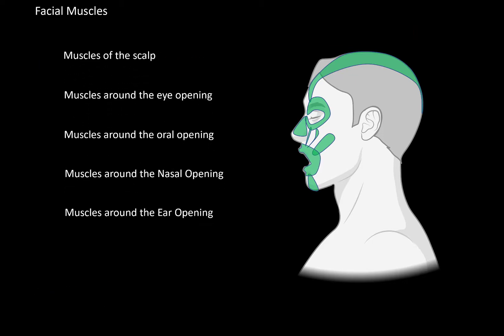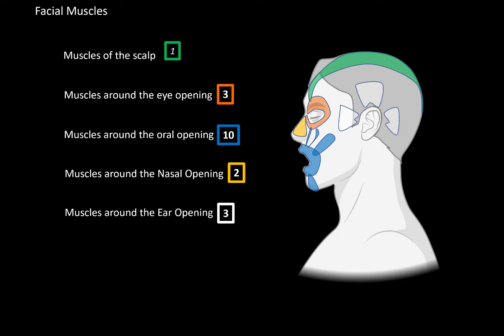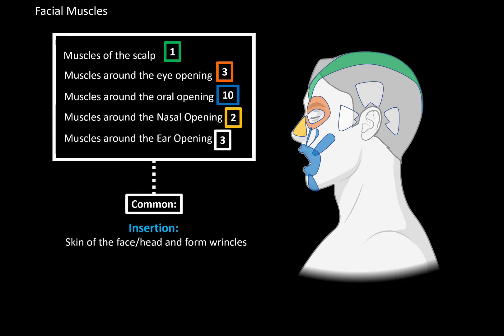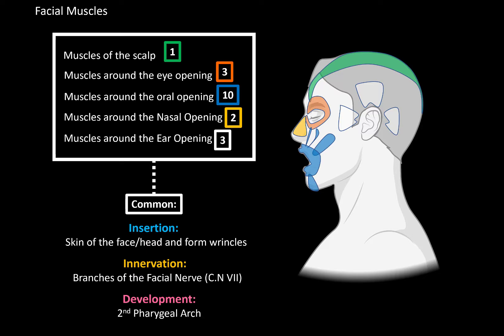The muscles of facial expression can be divided into groups depending on anatomical location: one muscle in the scalp, three around the eye opening, ten around the oral opening, two around the nasal opening, and three around the ear opening. All these muscles have a few things in common — they all insert at the skin and produce wrinkles when they contract, they are all innervated by the facial nerve (cranial nerve VII), and they all come from the second pharyngeal arch during development.